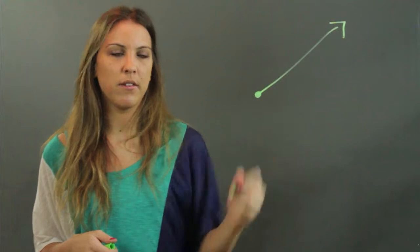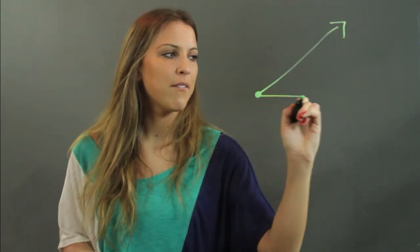So an angle is made up of two rays, and a ray begins at an endpoint and extends endlessly in one direction. So that'll be one ray, and then I'll have another one,